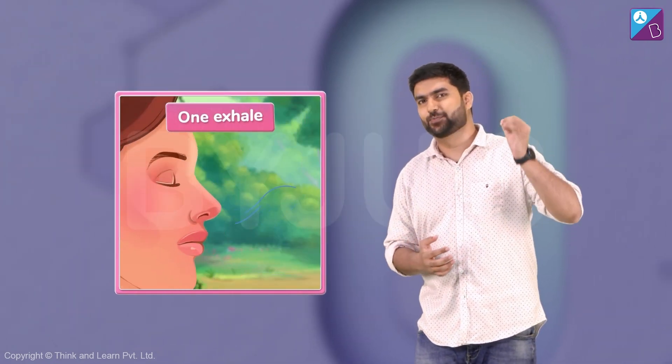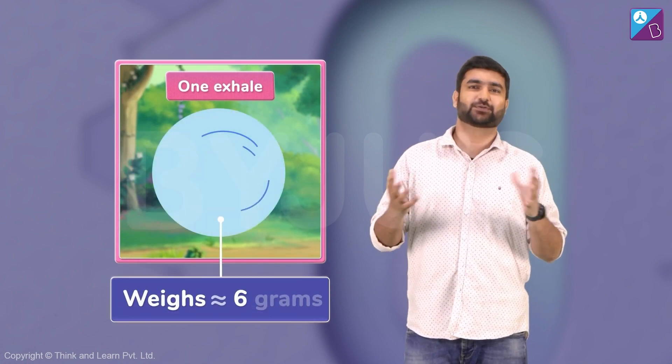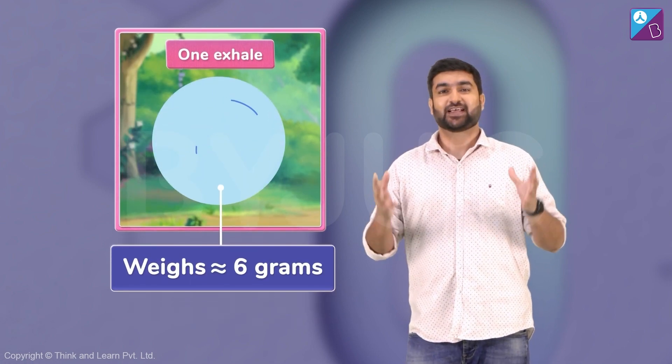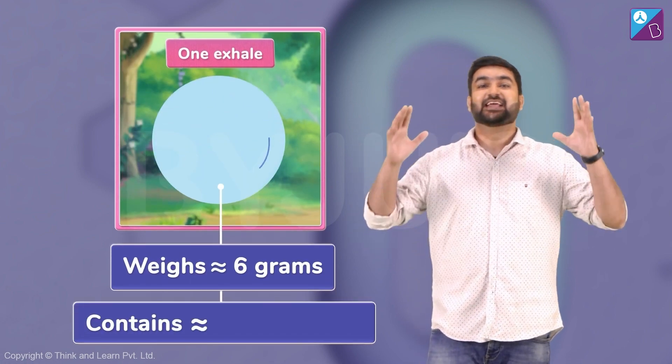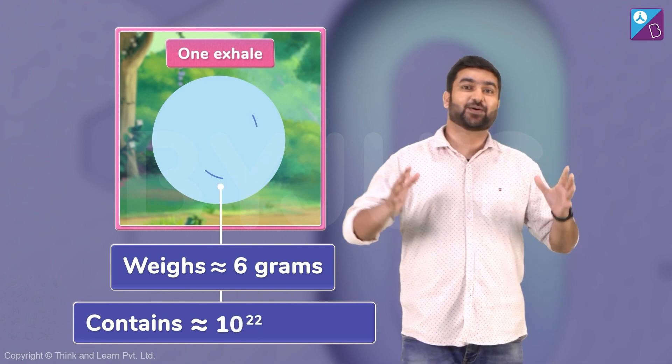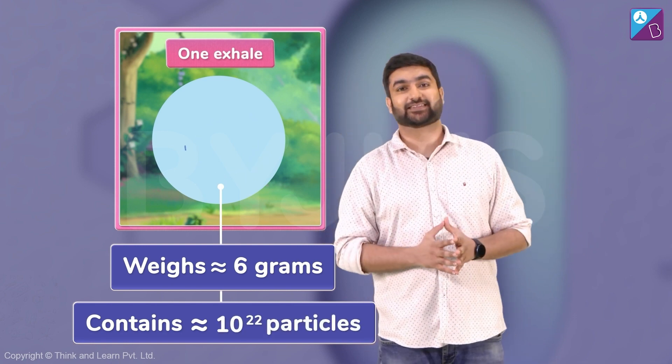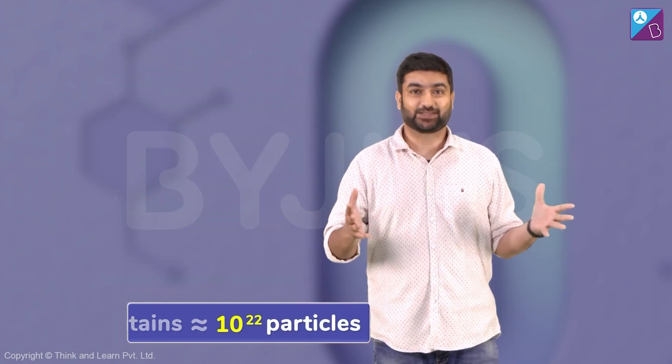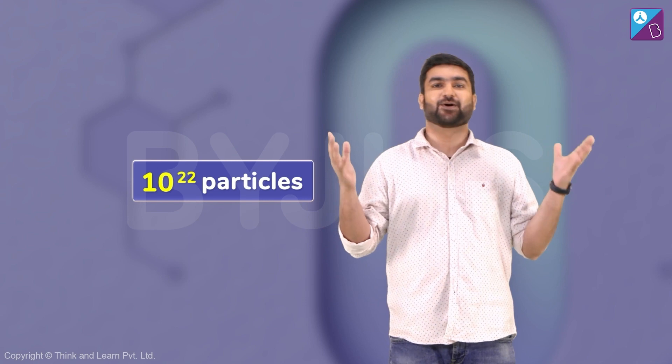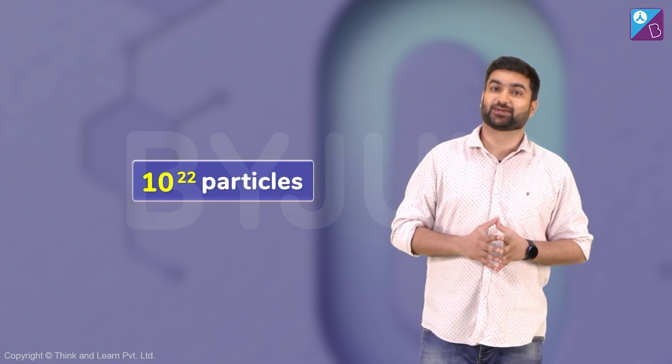Now at the micro scale, even a small amount of a substance has a huge number of particles. For example, just one normal exhale, which weighs about 6 grams, contains approximately 10 to the power 22 particles. And these huge numbers obviously complicate our calculations.